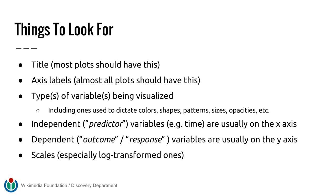Usually if you're looking at a plot with an x-axis and a y-axis, the independent variable — sometimes called the predictor — goes on the x-axis. When dealing with time, it's very important for time to be on the x-axis because we're used to thinking of time linearly and horizontally. On the y-axis you'll have the outcome variable, also called the response or dependent variable. Knowing these two things will help you get started interpreting even a particularly complex statistical graph.